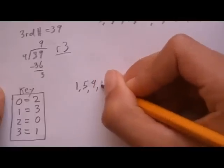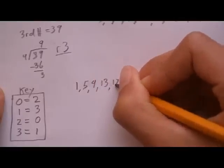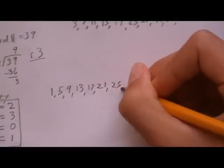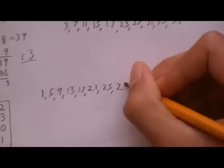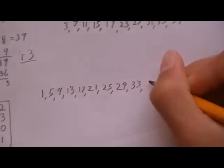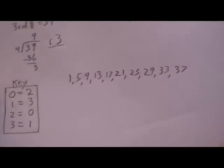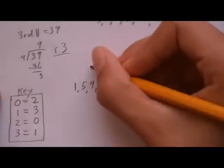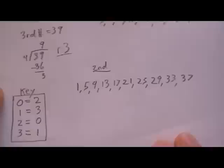13, 17, 21, 25, 29, 33, and 37. So these numbers are all the possible numbers for your second number in a combination.